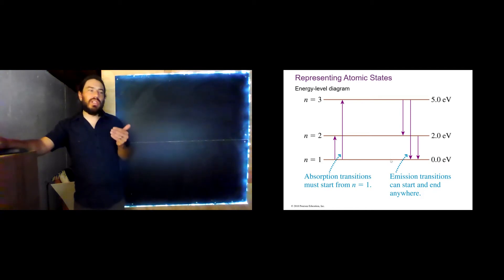So absorption transitions must start at n equals 1. And emission transitions can start anywhere and end anywhere. So this helps us understand this slide we saw earlier, where we saw that the absorption spectrum had fewer lines than the emission spectrum. Why is that? Because atoms really don't like to live in their excited state. They tend to exist in the ground state.